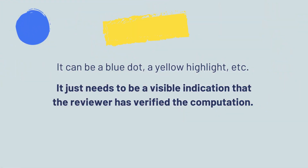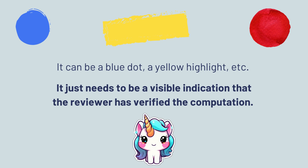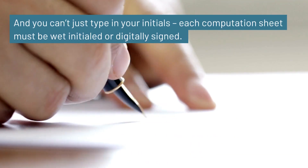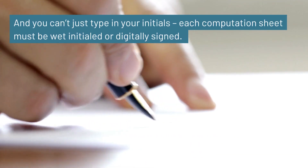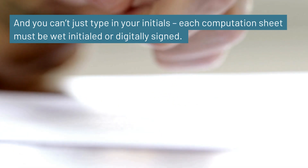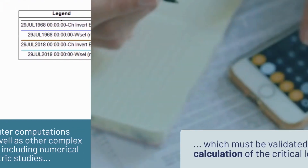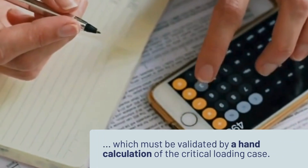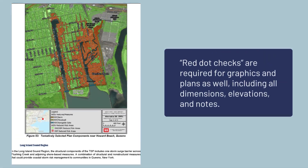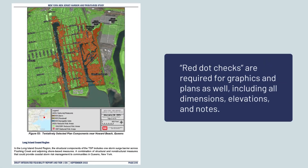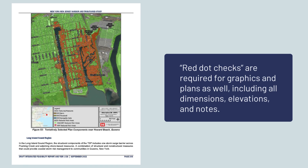It can be a blue dot, a yellow highlight, or even a unicorn sticker — it just needs to be a visible indication that the reviewer has verified the computation. One more thing: you can't just type in your initials. Each computation sheet must be wet initialed or digitally signed. This goes for computer computations and model runs, as well as other complex methods of analysis including numerical methods or parametric studies, which must be validated by a hand calculation of the critical loading case. Red dot checks are required for graphics and plans as well, including all dimensions, elevations, and notes.